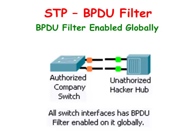Both types behave very differently. When enabled globally, BPDU filter will enable itself on interfaces configured with port fast. The interface will transmit 10 initial BPDUs to ensure there is no loop in the topology. If the interface receives a BPDU, it will disable port fast and BPDU filter on that interface, and the interface will begin normal spanning tree operation.